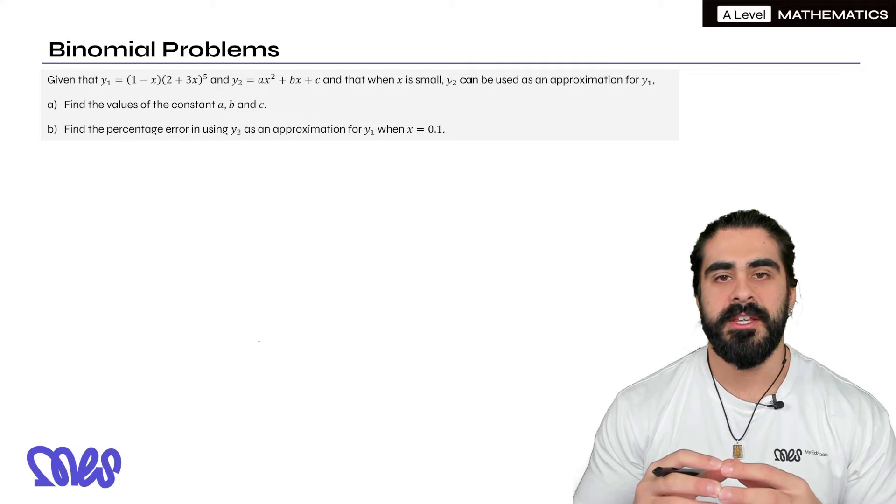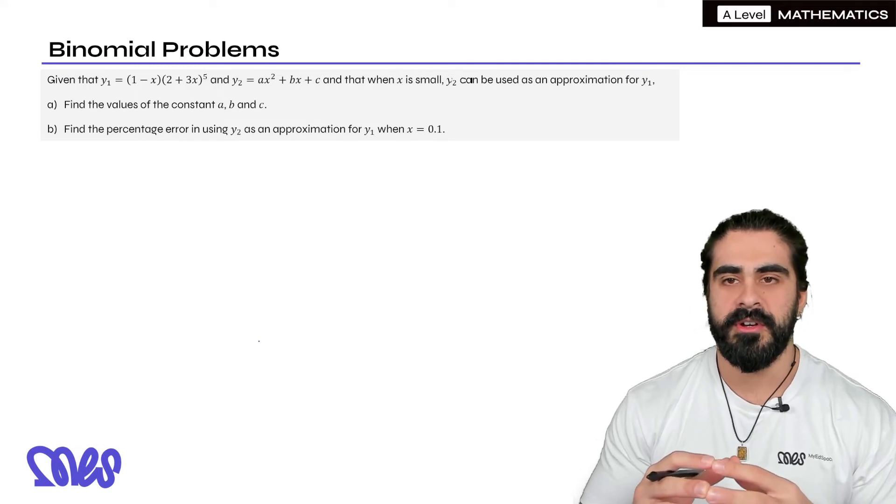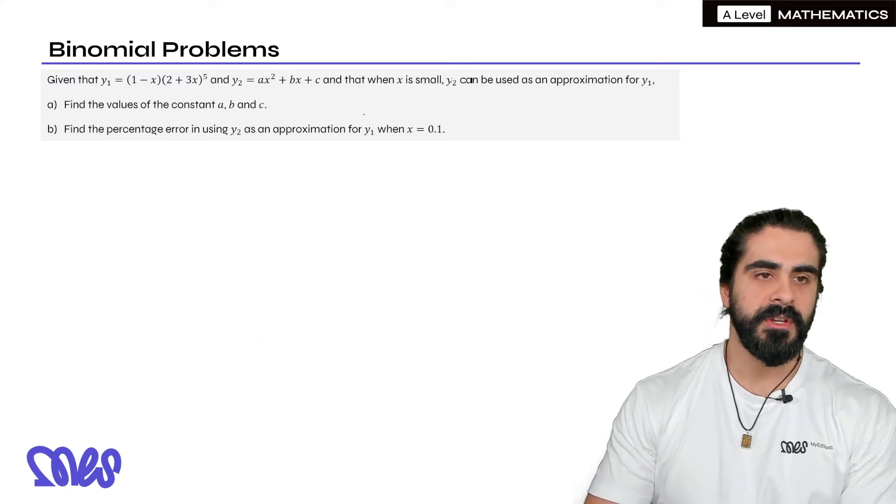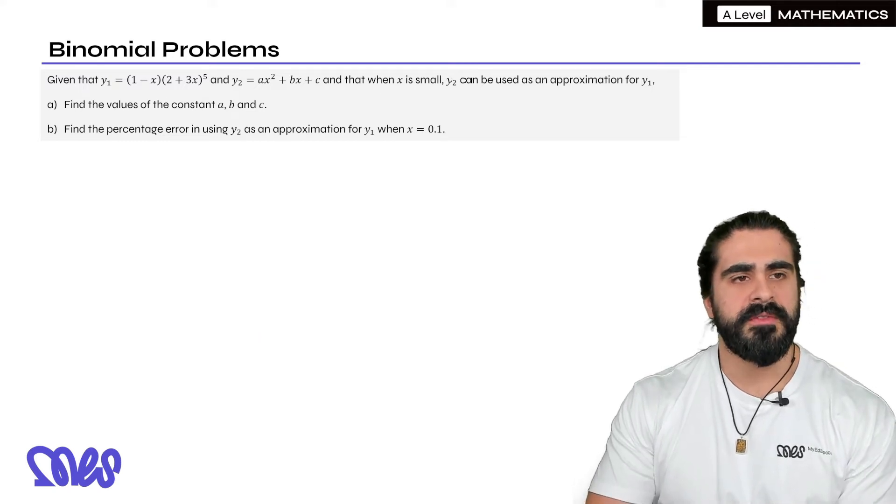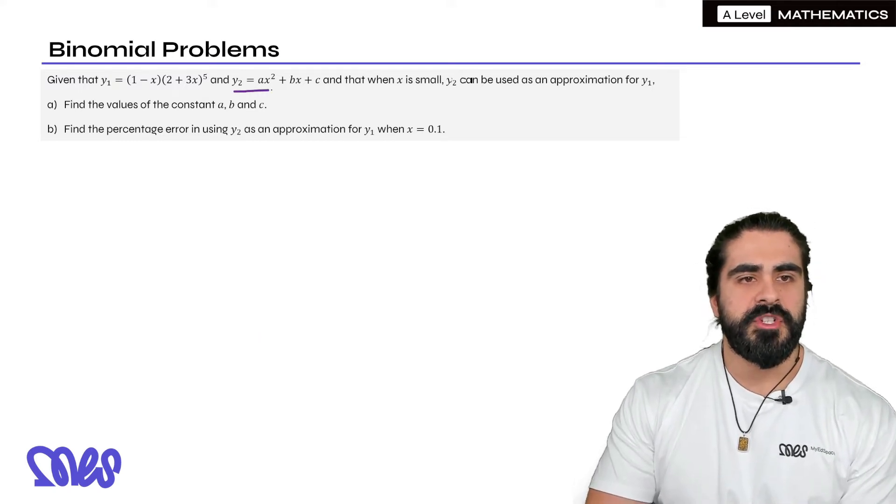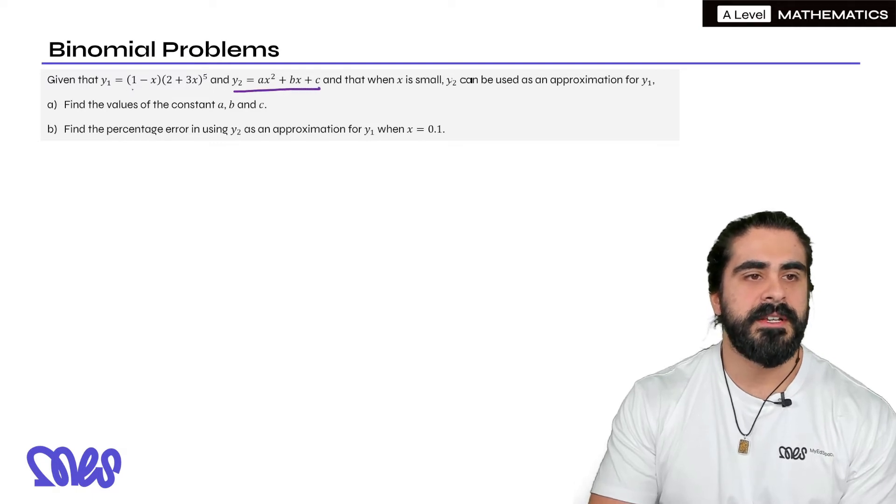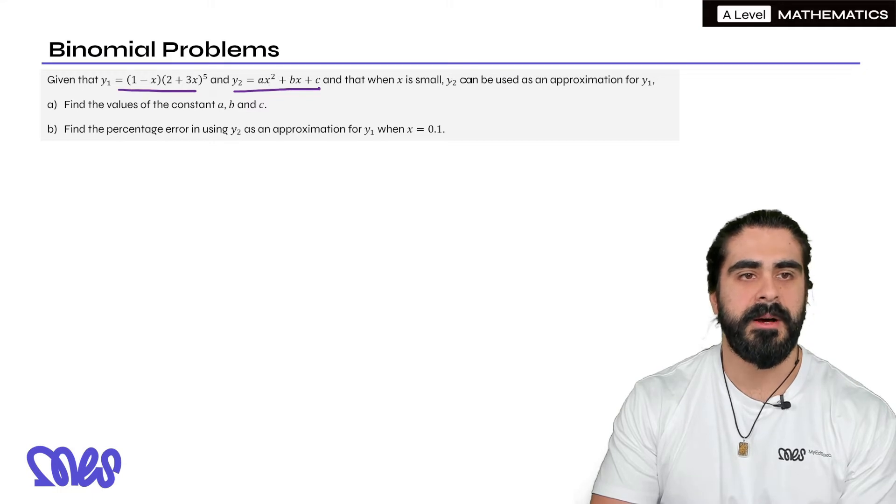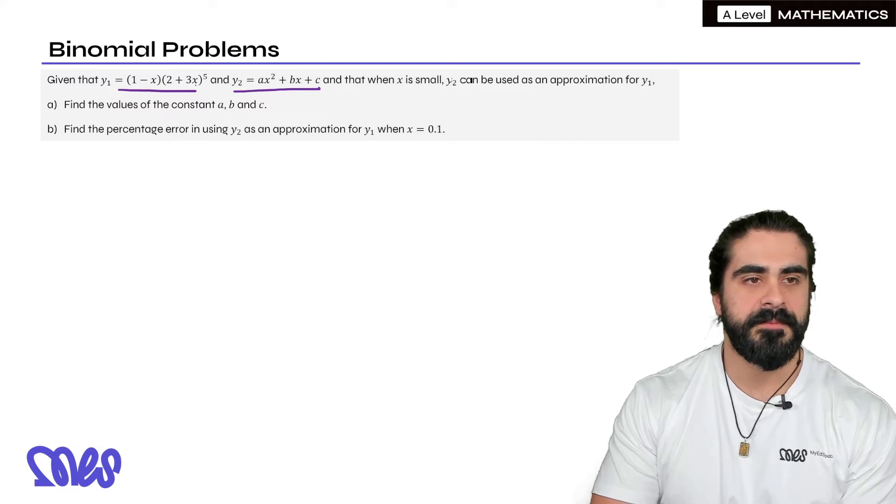y2 can be used as an approximation for y1. Find the values of a, b, and c. So it's saying for small values of x this function here can be used as an approximation for this one. And we can clearly see y2 is a quadratic. There's no brackets so there's an expansion that has happened up to the term x squared. So all we need to do is expand y1 up to the x squared term.